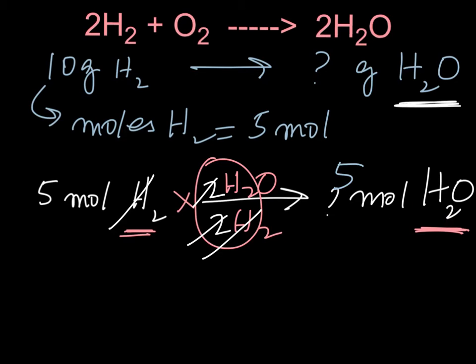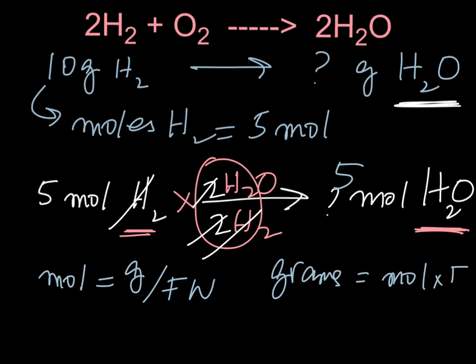And so we have to initially work with moles. Now once we have moles, that's not what they want, they want grams. So we can convert moles to grams. Again, we know that moles is equal to grams over formula weight. That means grams is equal to moles times formula weight. And in this case moles, we have 5.